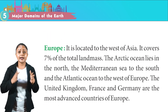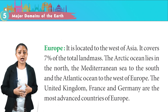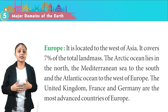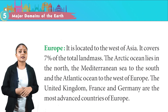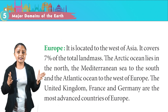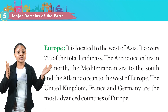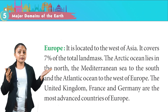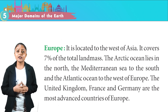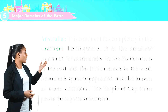Europe is located to the west of Asia. It covers 7% of the total landmass. The Arctic Ocean lies in the north, the Mediterranean Sea to the south and the Atlantic Ocean to the west of Europe. The United Kingdom, France and Germany are the most advanced countries of Europe.